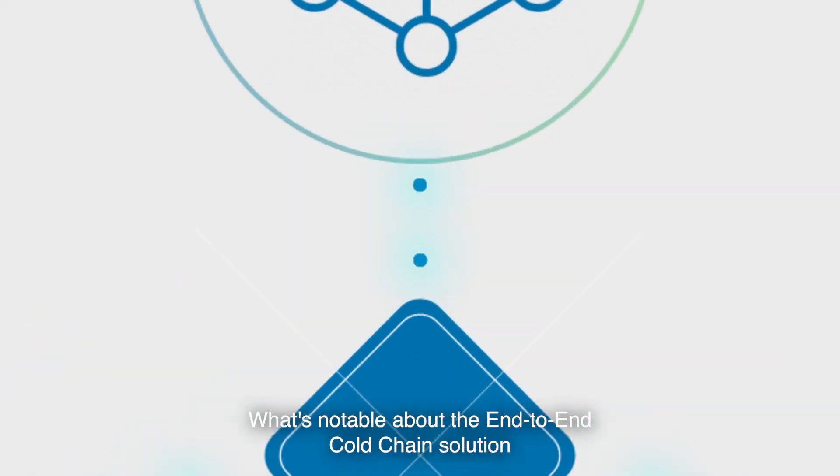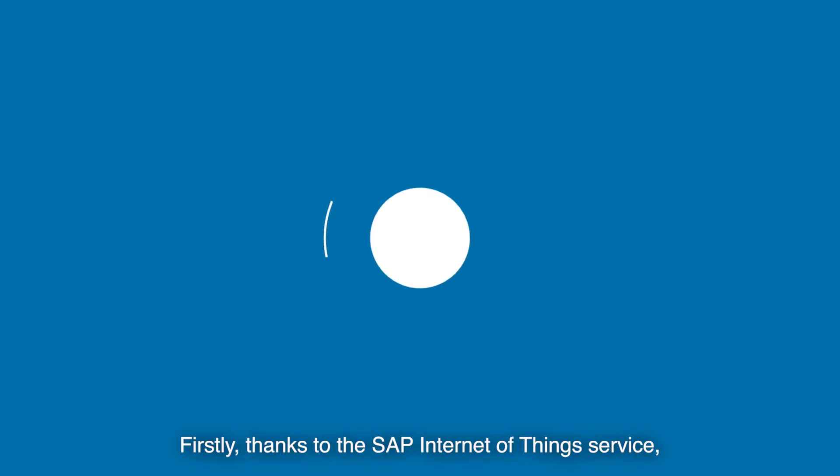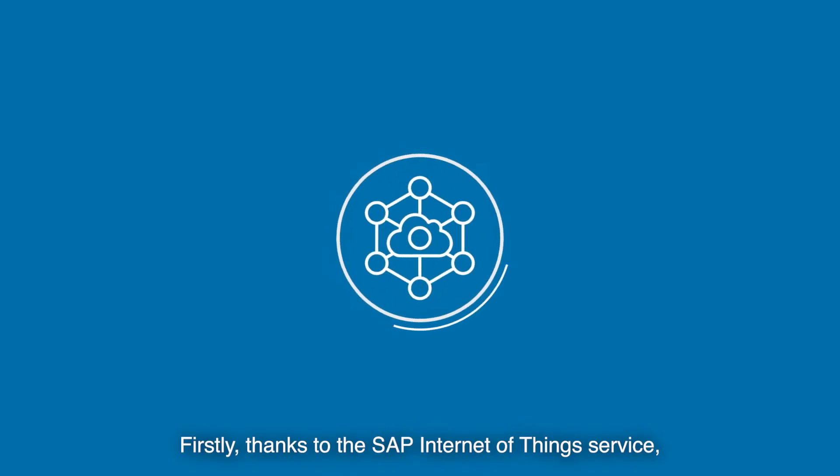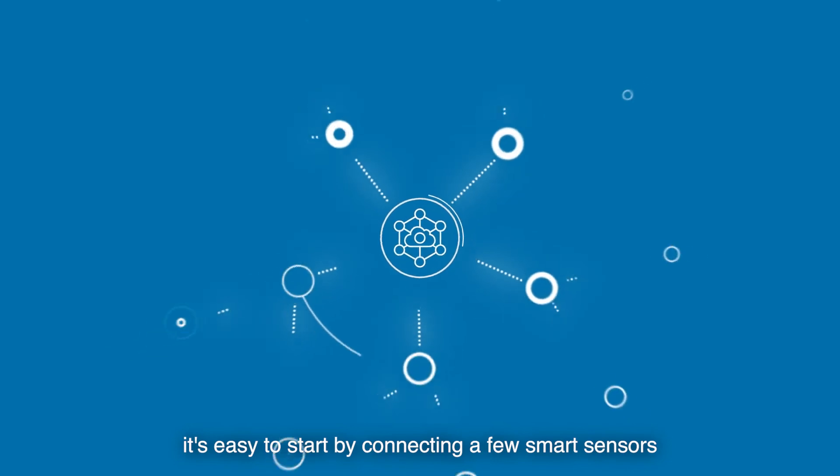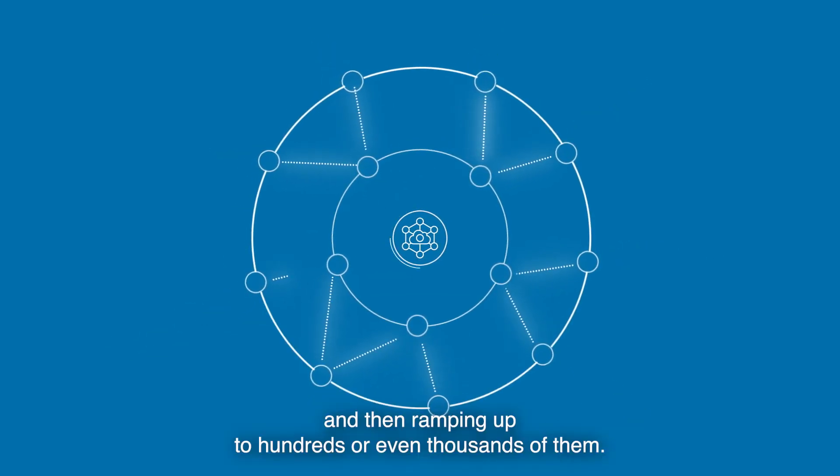What's notable about the end-to-end cold chain solution is that it's simple to adopt. Firstly, thanks to the SAP Internet of Things service, it's easy to start by connecting a few smart sensors and then ramping up to hundreds or even thousands of them.